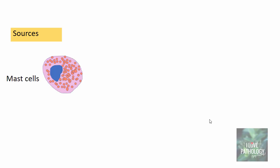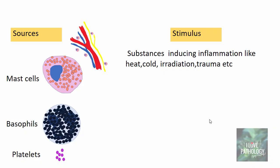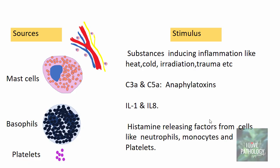The most important source of histamine is the mast cell and basophil, and another important source is the platelets. The various stimuli by which histamine is released include substances that induce inflammation like heat, cold, irradiation, and trauma. It can be anaphylatoxins like C3a and C5a, interleukin-1 and interleukin-8, and also histamine-releasing factors. These histamine-releasing factors are derived from cells like neutrophils, monocytes, and platelets already present at the site of inflammation.